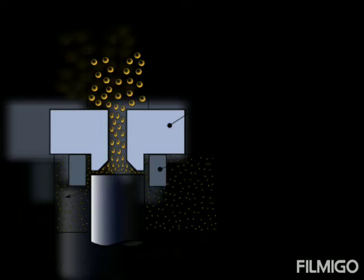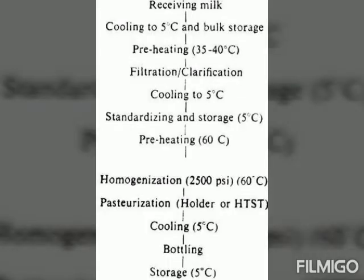Initially, the fat or cream layer floats on the upper side of the milk container. But after the process of homogenization, it gets evenly distributed throughout the milk and the cream layer disappears. The preheated milk at 60 degree Celsius is homogenized at 2500 to 3000 PSI pressure in a single stage homogenizer, and this causes the subdivision of the original fat to less than 2 micron size, which is considered satisfactory.